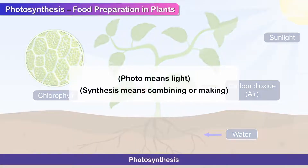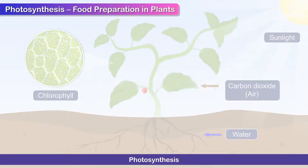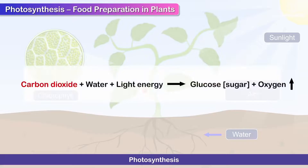Photo means light and synthesis means combining or making. The process of photosynthesis is represented as: carbon dioxide plus water plus light energy gives glucose (sugar) plus oxygen.